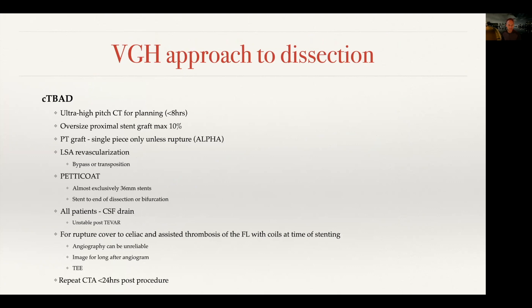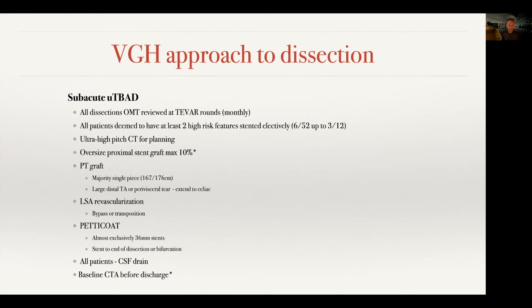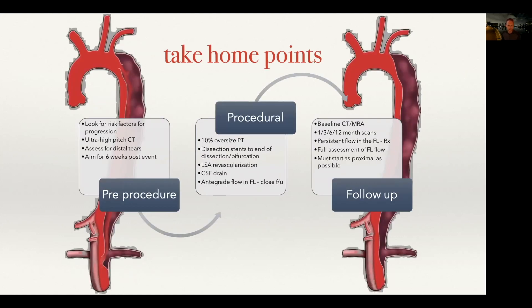This summarizes our approach to complicated Type B dissection — how we plan and treat these patients — and our subacute dissection approach for patients with uncomplicated Type B dissection treated at the six-week or three-month mark. All of them get subclavian revascularization and the PETTICOAT technique. Look for high-risk features of progression, aim for six weeks post event, don't oversize too much, and follow these patients up with one, three, six, and twelve month scans. It's really important to have a robust follow-up program in place.